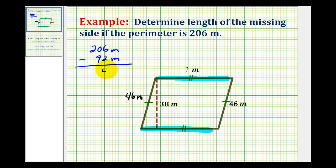So six minus two would be four. Twenty minus nine would be 11. So we have 114 meters for the length of these two sides.